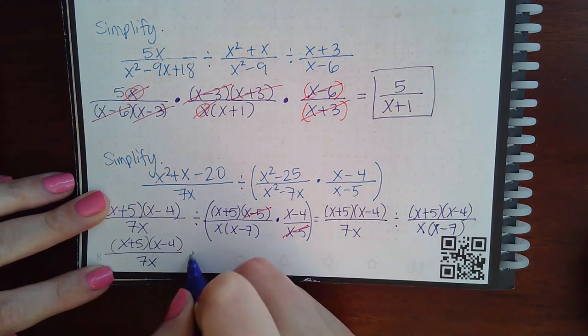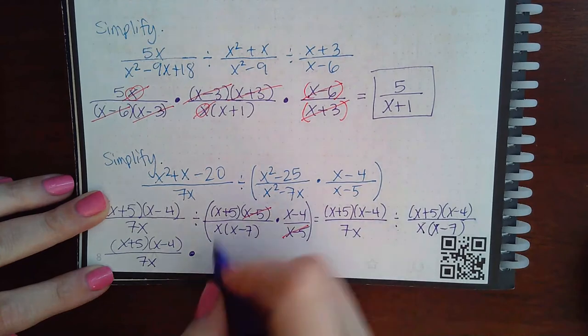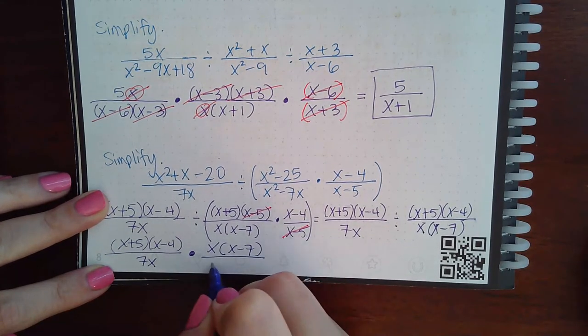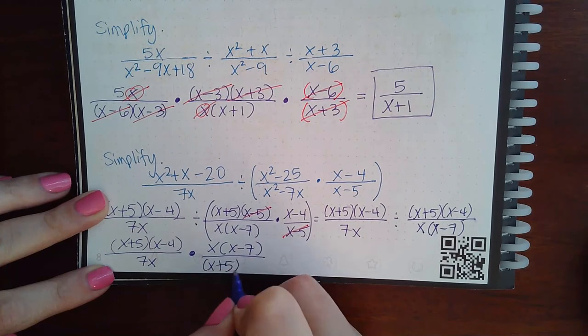And then the division changes to times. And then this flips around. So x, x minus 7. And then the two parentheses at the bottom now.